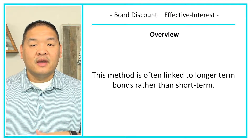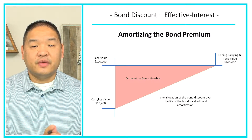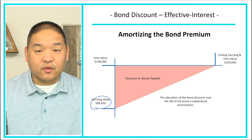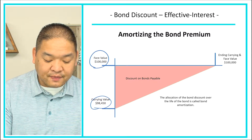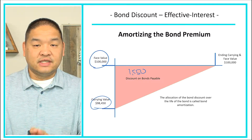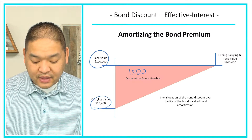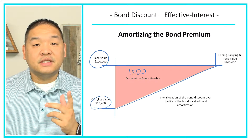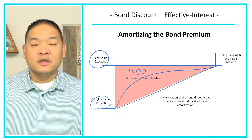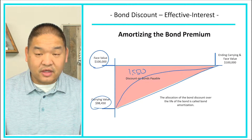This method is often linked to long-term bonds rather than short-term bonds because of that time value of money difference. On your screen we can see that when we issue the bond we can only issue it for $98,450, but the bonds are worth $100,000, so we've got this difference of $1,550 to deal with. This chart emulates the straight-line method, but with the effective interest method it's going to have a curve when amortizing that $1,550.